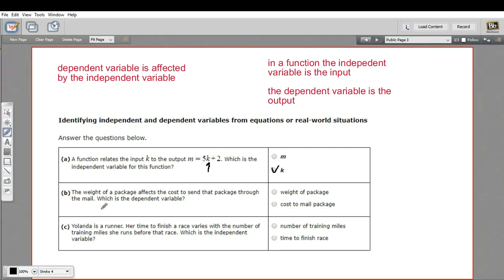B says the weight of a package affects the cost to send the package through the mail, which is the dependent variable. So in this situation, what is the thing that changes depending on some other number? In this case, it's what it costs you. The cost changes depending on how heavy the package is. So the cost is affected by the weight, so the dependent variable is the cost.